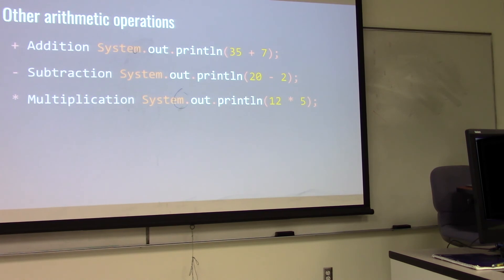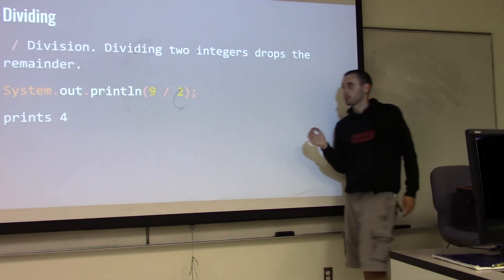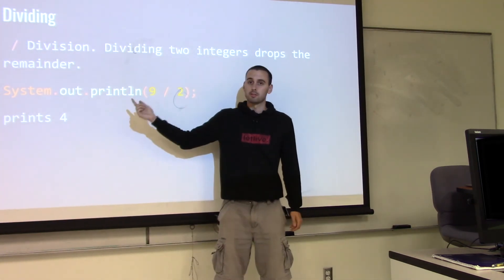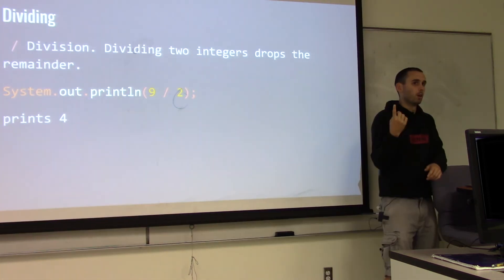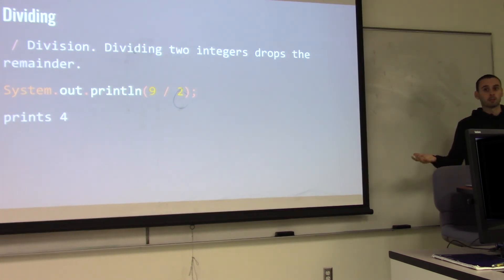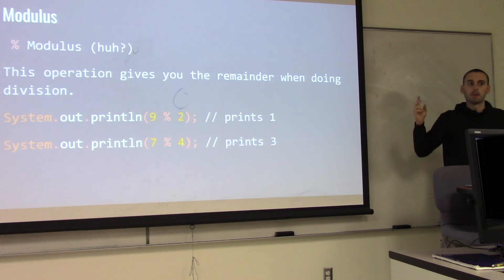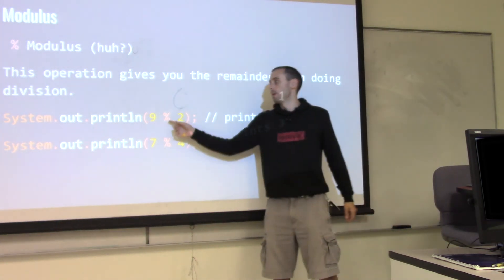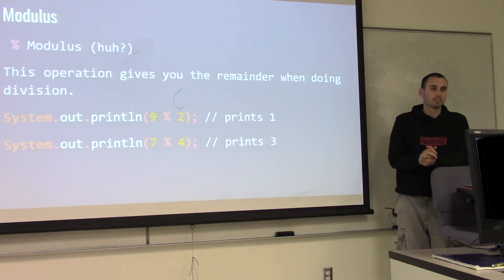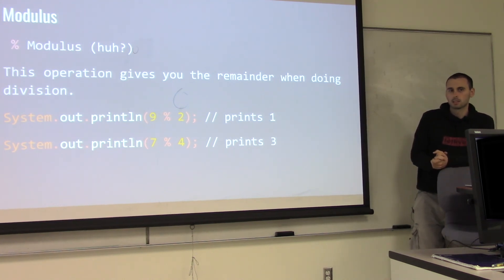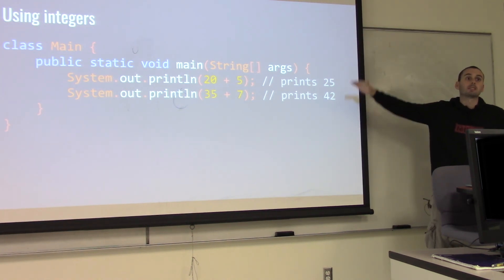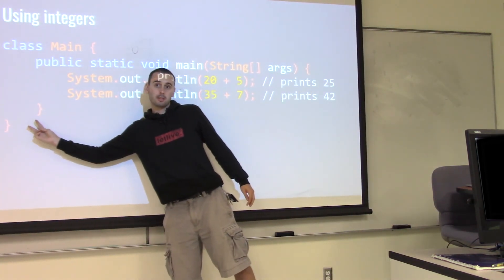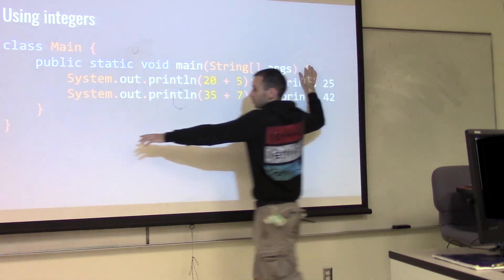Division is a little funky. Since integers are whole numbers, dividing two integers gives a whole number result — it just drops the remainder. So 9 divided by 2 is 4, not 4.5 — it truncates. 9 divided by 5 gives 1. If you want the remainder, use the percent sign — that's called modulus or 'mod' for short. 9 mod 2, 7 mod 4. We use percent because it wasn't being used for anything else, and modulus is useful for many things. In Lab 1.3, you'll write multiple statements — make sure they're inside the braces.